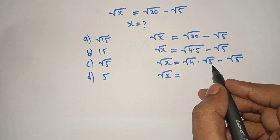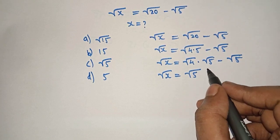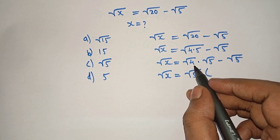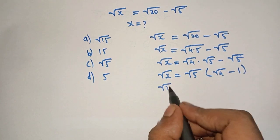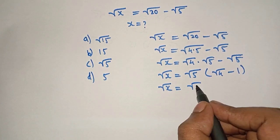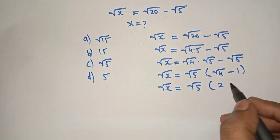Square root of x equals, here we will take square root 5 as common. Now, what will remain under the bracket? Square root of 4 minus 1. Here, square root of x equals square root of 5 times, what is square root of 4? 2 minus 1.